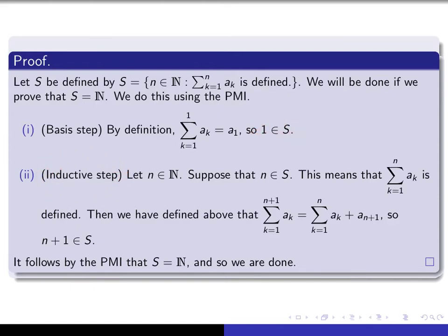In the inductive step, we give ourselves a generic n in the natural numbers and assume n is an element of S, meaning this sum is defined. We've defined the sum from 1 to n+1 by means of that equality: since the sum from 1 to n is defined and a_{n+1} is defined, and we know how to add two numbers together, the sum from 1 to n+1 is also defined as a real number. Therefore n+1 is an element of S, and it follows by the principle of mathematical induction that S is all of N.